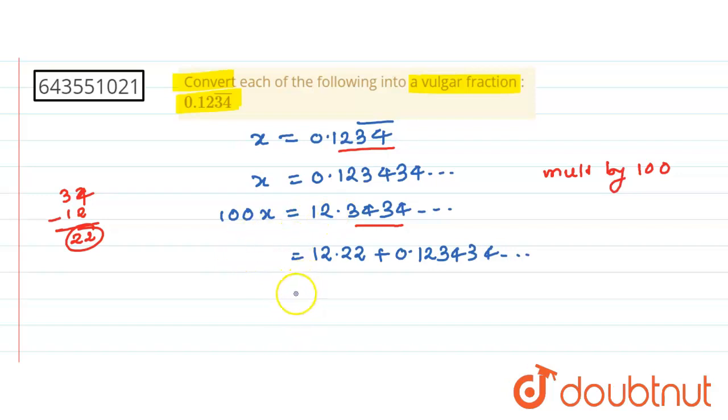Okay, now this is 12.22 plus this is 0.1234 bar, 34 is repeating.